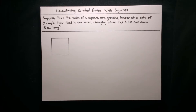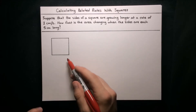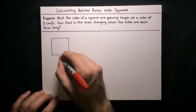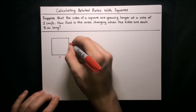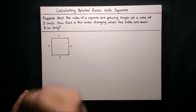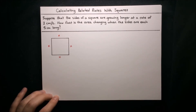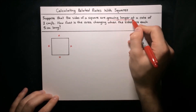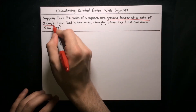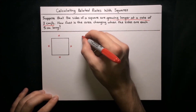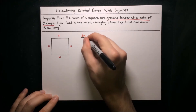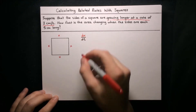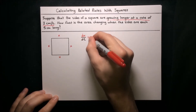Let's draw this up. We've got our picture of a square right here, and we can label the sides with a variable, say x. So all the sides of the square have length x. We also know that the sides are growing longer at a rate of 2 centimeters per second, so the rate of change of x with respect to time is equal to 2.